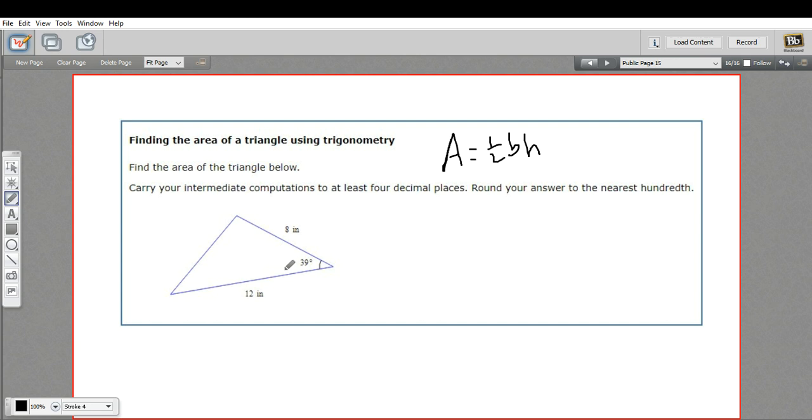This is not a right triangle, or at least it doesn't look like it. We know that one angle is 39 degrees, but we don't know either of the other angles.